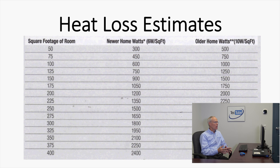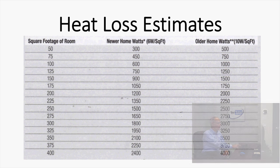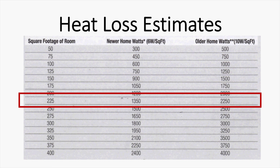Newer homes is 6 watts per square foot. Older homes is 10 watts per square foot. So let's just pick a room, a 225 square foot room. You can see for an older home, we need 2250. For a newer home, we need 1350.